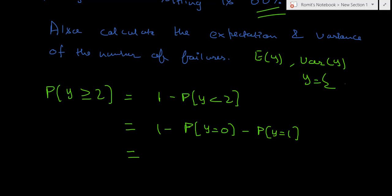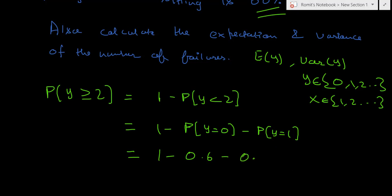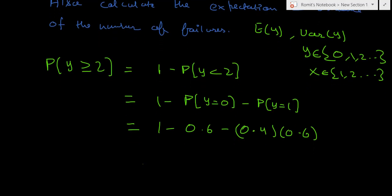Calculating: P(Y ≥ 2) = 1 − P(Y = 0) − P(Y = 1). P(Y = 0) is the probability of succeeding on the first try = 0.6. P(Y = 1) is the probability of failing once (0.4) then succeeding (0.6) = 0.24. So the answer is 1 − 0.6 − 0.24 = 0.16.